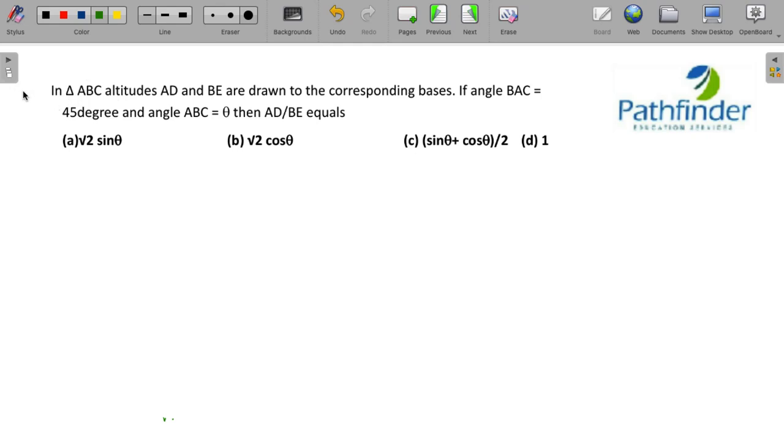This is CAT 22 slot 2 question number 1. In triangle ABC altitudes AD and BE are drawn to corresponding bases. If angle BAC is 45 degree and angle ABC is theta then AD upon BE must be equal to.